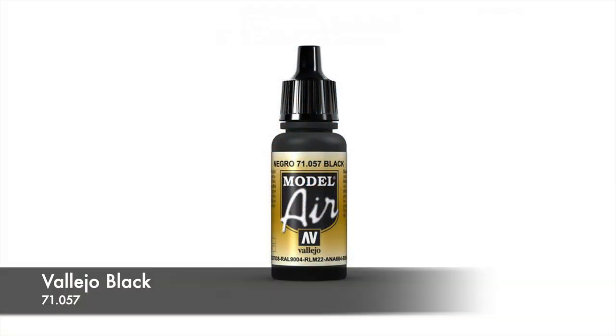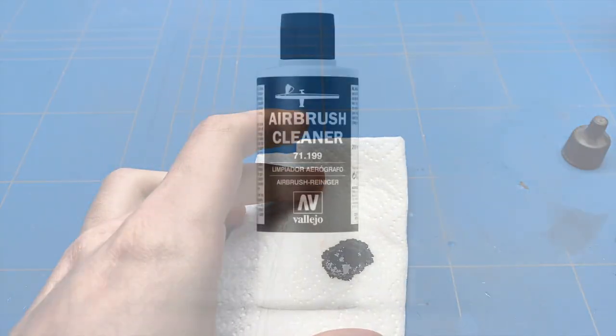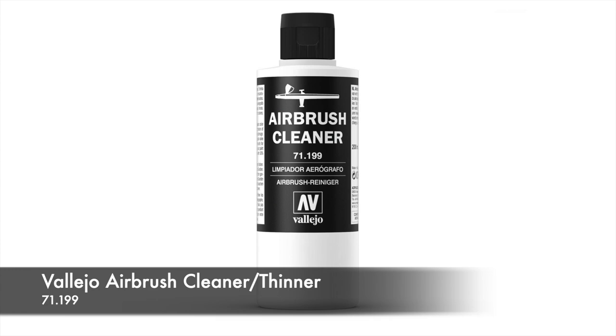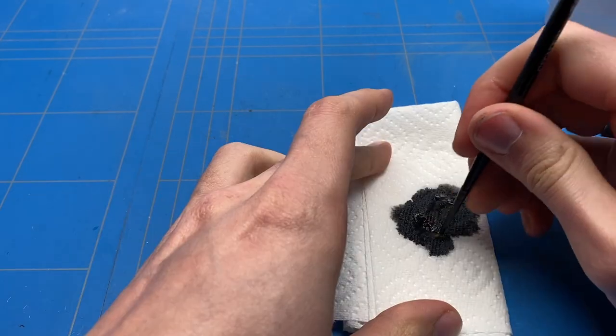Depending on which look you're after for the wood, that also depends on the colors you're going to be using. In this case, I wanted to have a darker grain in there as well. Firstly, I started with the two lighter and darker brown tones, and now I'm just going to add black to it.